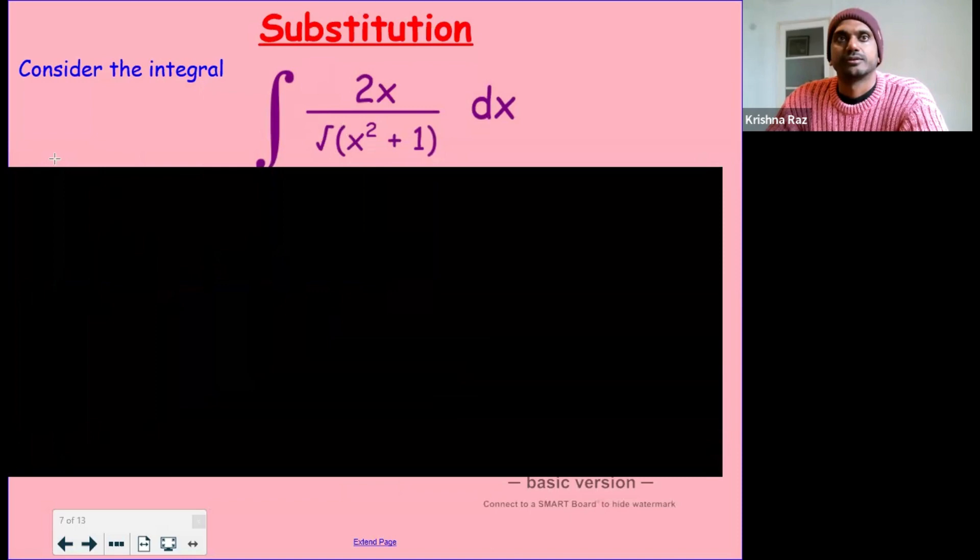So if we let u equal x squared plus 1, we would differentiate and get du by dx equals 2x.